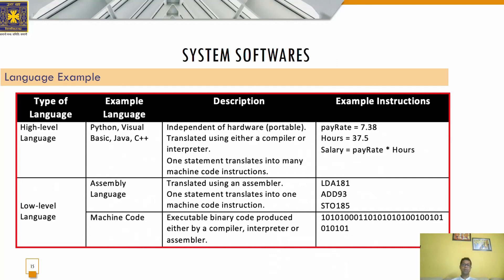Advantages of assembly level language: errors can be easily tracked and solved, unlike machine level language. It is not necessary to keep track of memory locations. Assembly level language is easy to modify and can perform complex tasks by writing less code. Disadvantages: assembly level language is machine dependent and needs more memory to run extensive programs, so such programs cannot be executed on small computers. The programmer needs knowledge of hardware before coding and it is more prone to errors.